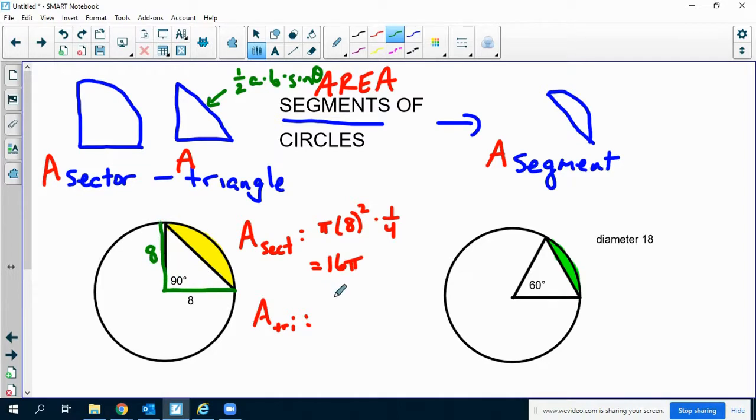So in this case, it's going to be 1/2 times 8 times 8 times the sine of 90 degrees. Now, we don't really understand what's going on with sine of 90 degrees. That's not something that we talk about in trigonometry, but your calculator knows what to do with it. All you have to do is type it in the calculator as long as it's in degree mode. If you type this in the calculator, you'll get 32.